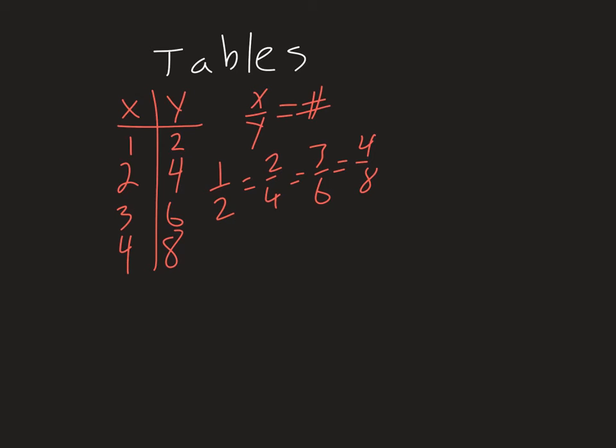So they have the same number value when I make the ratio. However, if I look at a non-proportional relationship, and let's say it starts out the same. I have 1, 2, then 2, 4, and then I get 3, 7, and 4, 10.